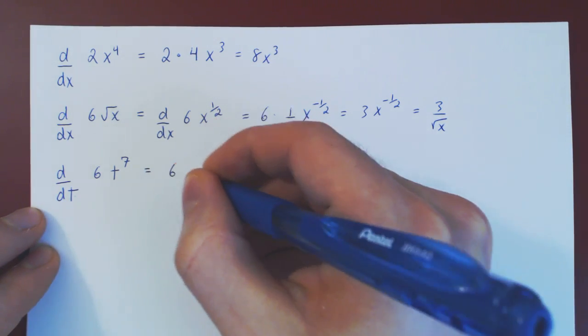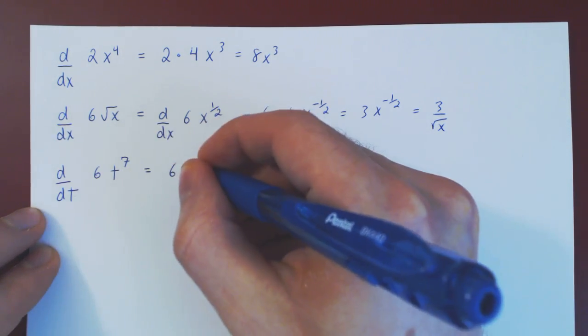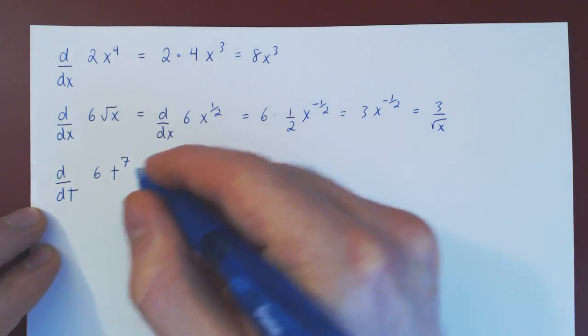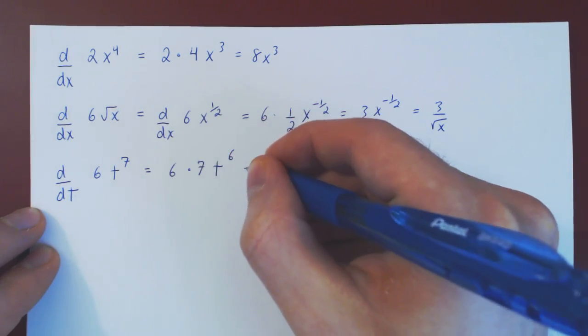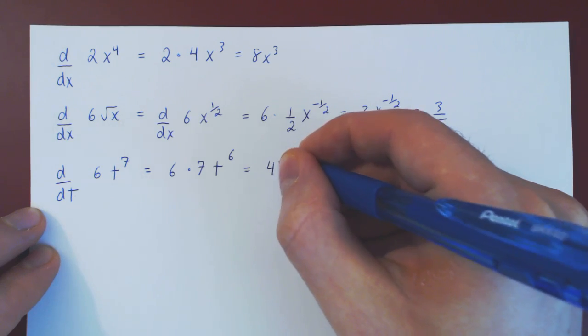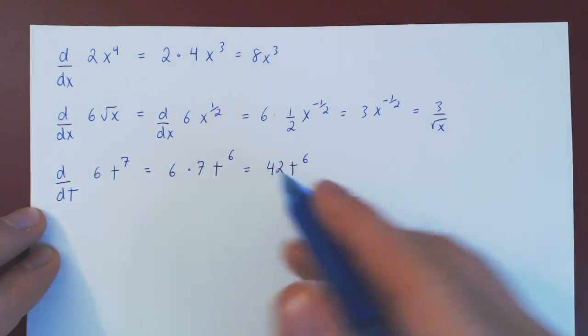6 stays there as a constant multiple, power rule, we bring the exponent down, t to the 7 minus 1, t to the 6, and 6 times 7 is 42, so 42t to the 6, and that's it.